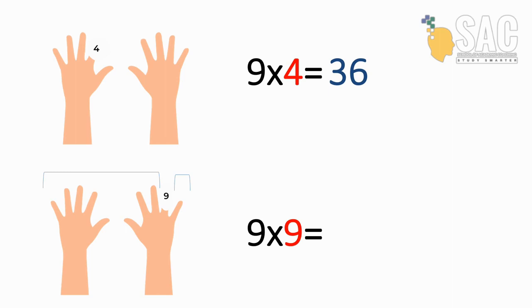How about 9 times by 9. Fold your 9th finger. Count the number of fingers on the left and right. 8 on the left, so 8 tens. 1 on the right, so 1 one. So 9 times by 9 is 81.